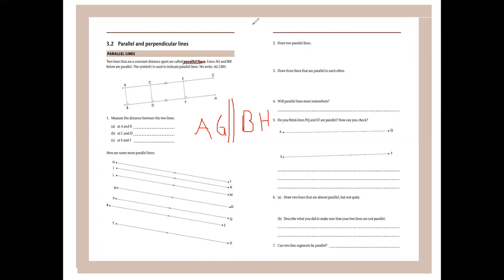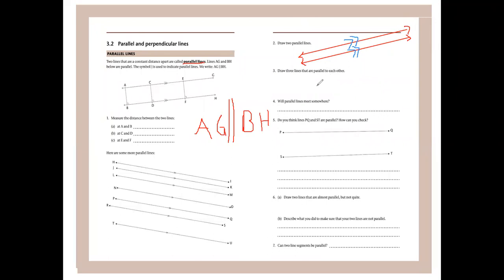Draw two parallel lines — let's draw them at a bit of an angle, making sure they are the same distance everywhere. Don't forget your arrows, because we were asked to draw two parallel lines, not two parallel line segments. Label them and use the parallel symbol to indicate that the two lines are parallel. If you have enough space, an easy way to draw them is to draw on either side of your ruler, which ensures they are the same distance apart.